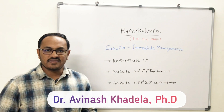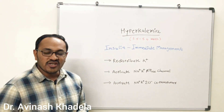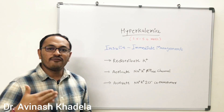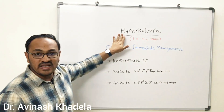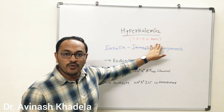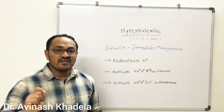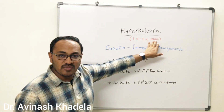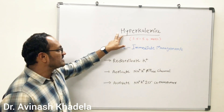Hello friends, let's discuss hyperkalemia. Hyperkalemia is defined as a condition in which the potassium level in the extracellular fluid increases more than 5.5 or 6 milliequivalents per litre. Normally, potassium in the extracellular fluid or serum is present somewhere between 3.5 to 5.0 milliequivalents per litre. When potassium rises above 5.5 or 6 milliequivalents per litre, that condition is known as hyperkalemia.